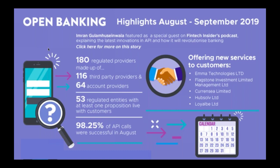We believe there are a much larger number of account providers not just in the UK and Europe but also in many other markets using the standard, but this is really just what's happening in the UK. These 64 account providers account for the vast majority of current account and credit card holders — probably around 95% of all customers now have an account with one of these 64 providers. We're seeing 53 regulated entities at the end of September who have got at least one proposition live.